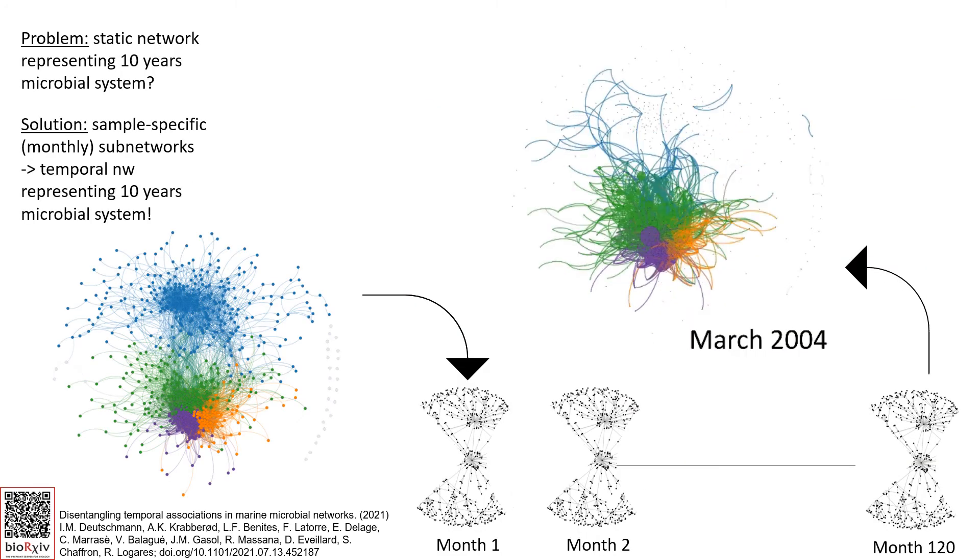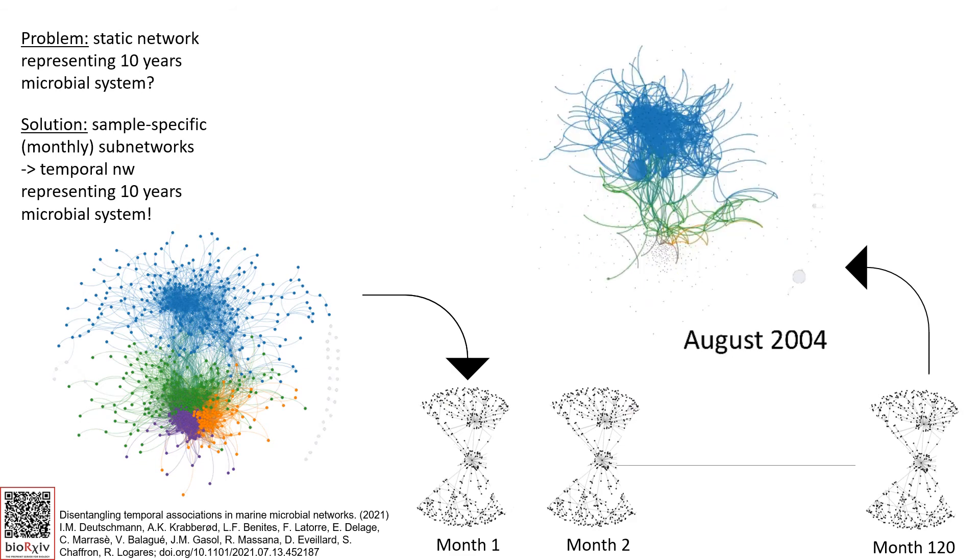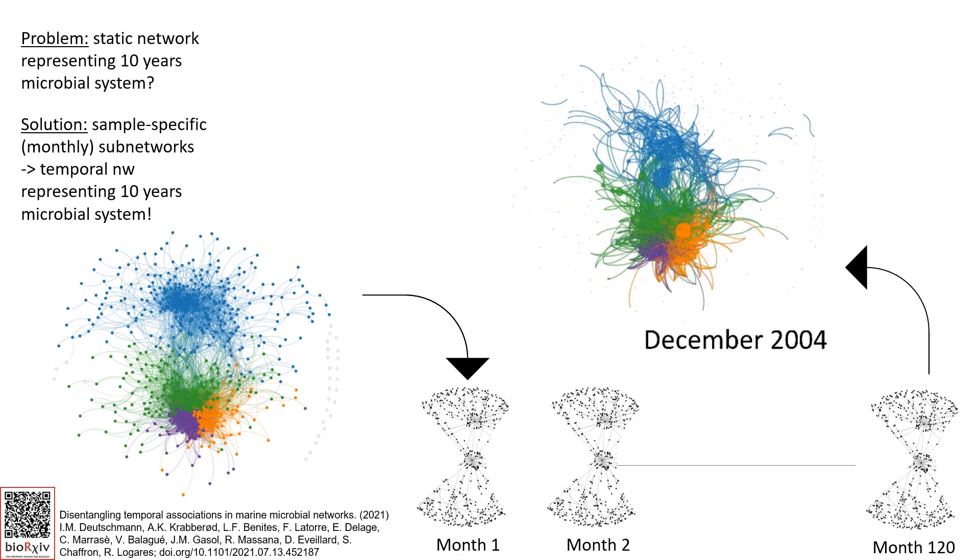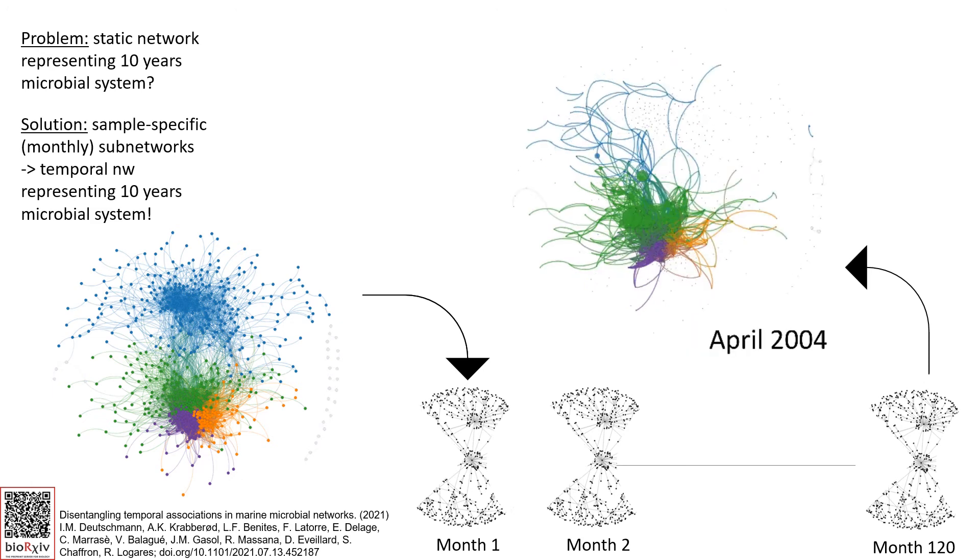My solution is a temporal network. I generated for each month a subnetwork from the static network. The temporal network seems to undergo a cycle.